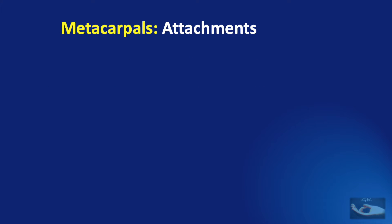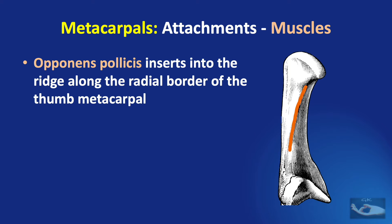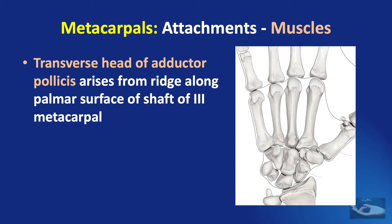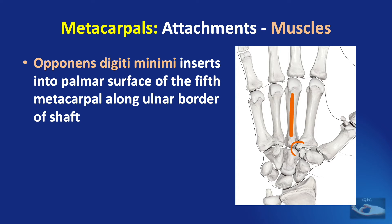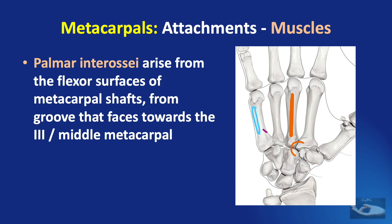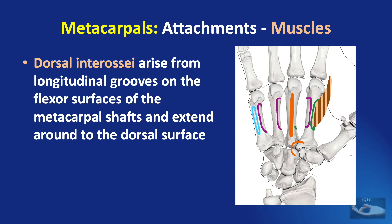The attachments to the metacarpal bones include muscles, tendons, and ligaments. The opponens pollicis inserts into the ridge along the radial border of the thumb metacarpal. The transverse head of adductor pollicis arises from the palmar surface of the third metacarpal shaft, and the oblique head from the bases of the index and middle finger metacarpals. The opponens digiti minimi inserts into the palmar surface of the fifth metacarpal shaft. The palmar interossei arise from the radial side of the little and ring finger shafts and the ulnar side of the index finger shaft. The dorsal interossei arise from longitudinal grooves on the flexor surfaces of the metacarpal shafts, extending around to the dorsal surface.